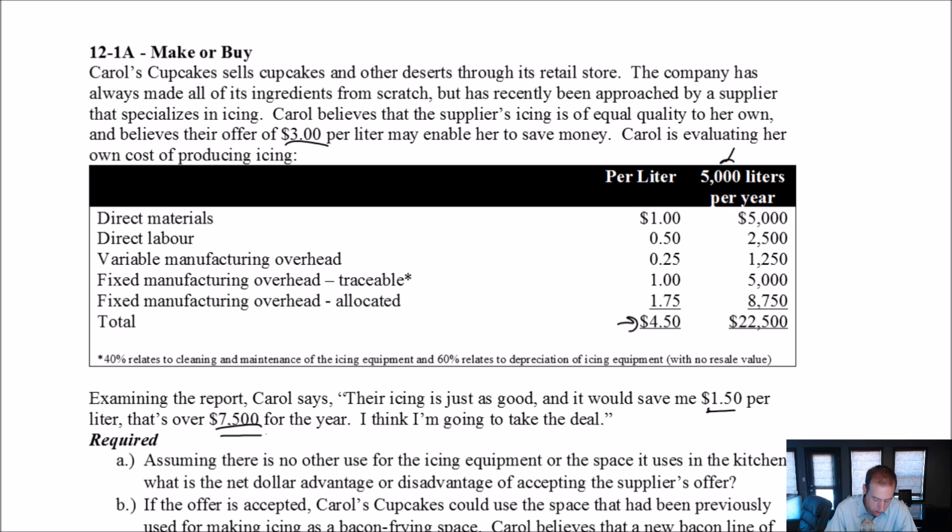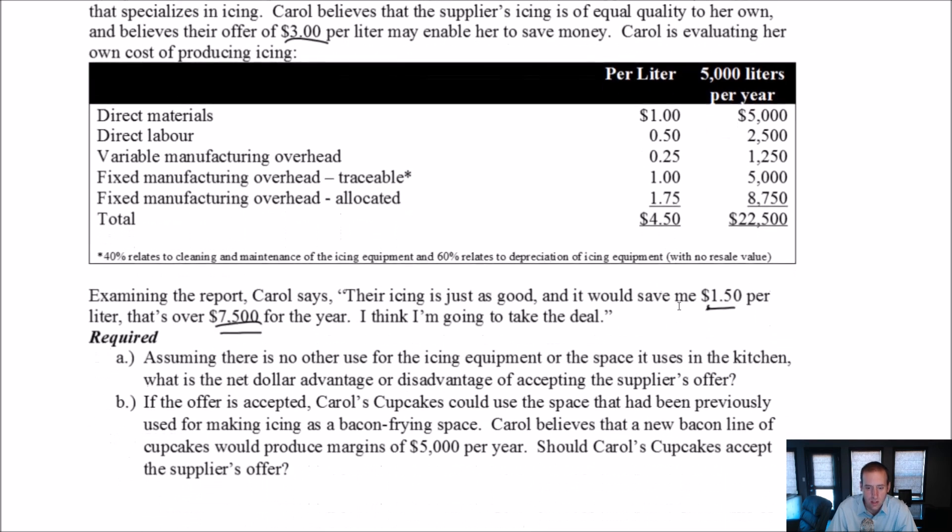So it says, assuming there's no other use for the icing equipment or the space it uses in the kitchen, what is the net dollar advantage or disadvantage of accepting the supplier's offer? Well, to figure out this, we're going to need to figure out which of these costs are relevant to her decision and which are not relevant to her decision. When I answer this type of question, I always like to lay it out in sort of two columns. So one for make and one for buy because we're doing make versus buy.